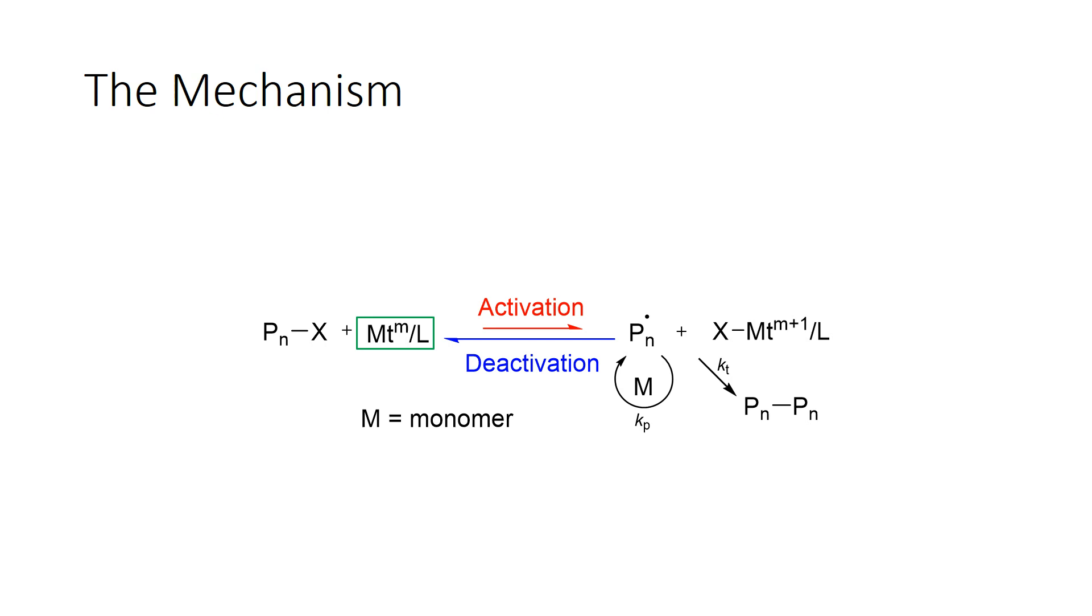Then over here on the right side we have what is called the propagating radical. So to the left the dormant species, to the right the propagating radical. And the propagating radical is formed by the catalyst in oxidation state 1 abstracting a halogen atom in the so-called activation process forming this propagating radical. In that process the catalyst goes into oxidation state 2, in this case for copper, where I have the halogen sitting on it now.